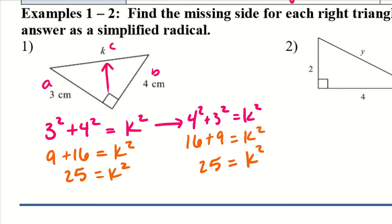Don't be concerned about which one is A and which one is B. Just know that you have to add the squares of the two legs together — it doesn't matter which order. To get rid of the square, take the square root of both sides. Now I have K equals 5. The length of that third side is 5.